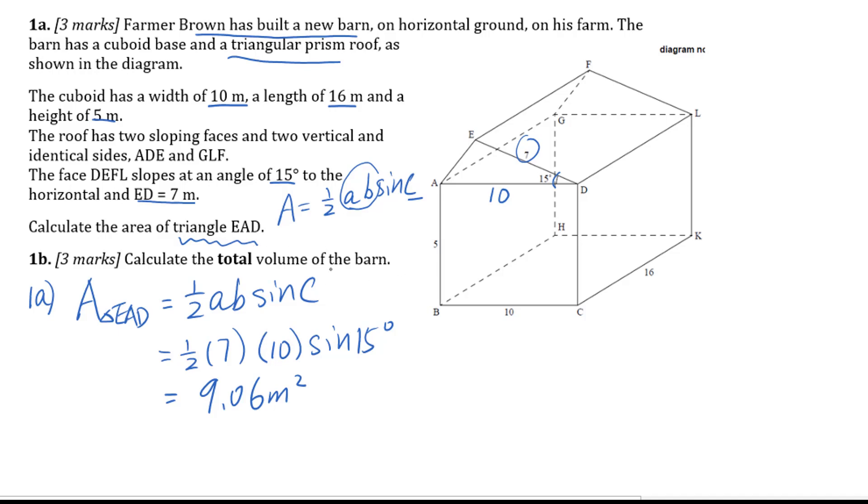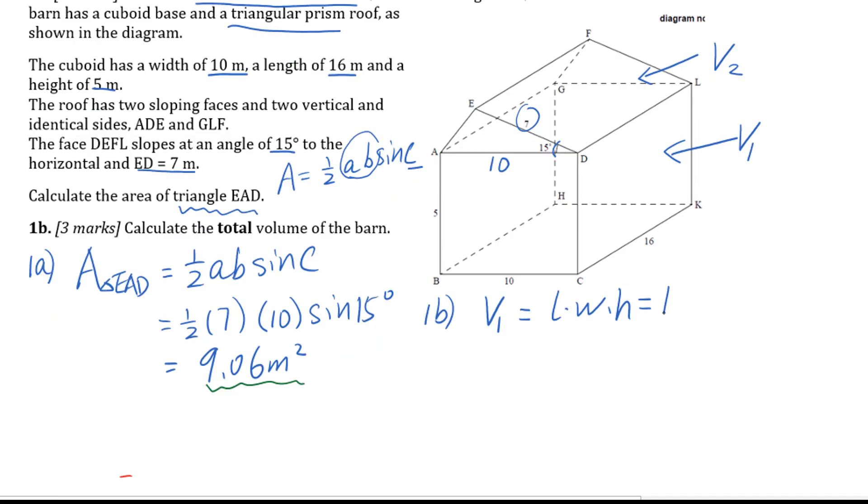For 1B calculate the total volume of barn. For the volume we have two parts. One part is this cuboid V1, and also we have this triangular prism V2. So for 1B the V1 equals length times width times height. That equals 16 times 10 times 5. You will get 800. For the V2 that's the triangular prism, which means the base area times height. For this triangular prism you could see this is your base area. The height will be DL, so this is 16.